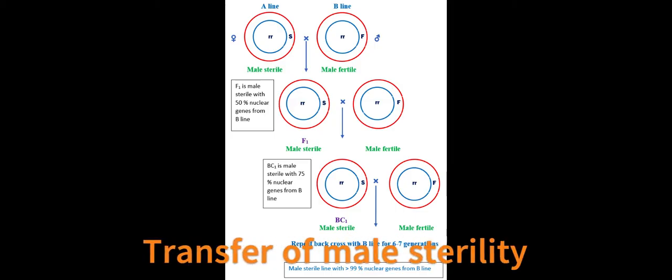Cytoplasmic male sterility can be transferred to the female parent in a hybridization program by crossing a line with male sterile cytoplasm and non-restorer gene with a line with male fertile cytoplasm and non-restorer gene. The resulting F1 is back-crossed with the B line for 6 to 7 generations.